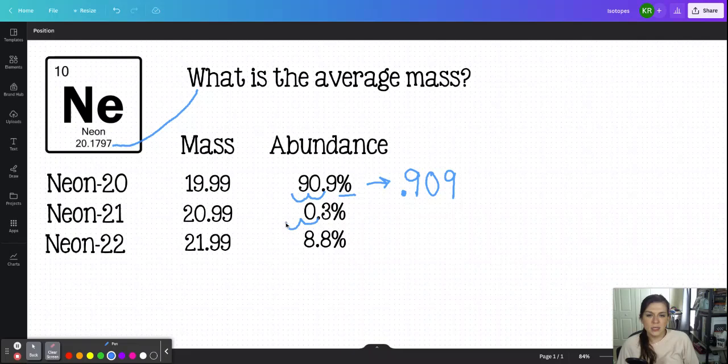So really you're moving the decimal two places to the left. And if we do that here, we're going to have to add a zero right there. So we'd have 0.003 and then 1, 2, put a zero right there, 0.088. Okay. And I like the leading zero here. So now my percent abundances are no longer percents, they're decimals, which means I'm allowed to put them in equations now.